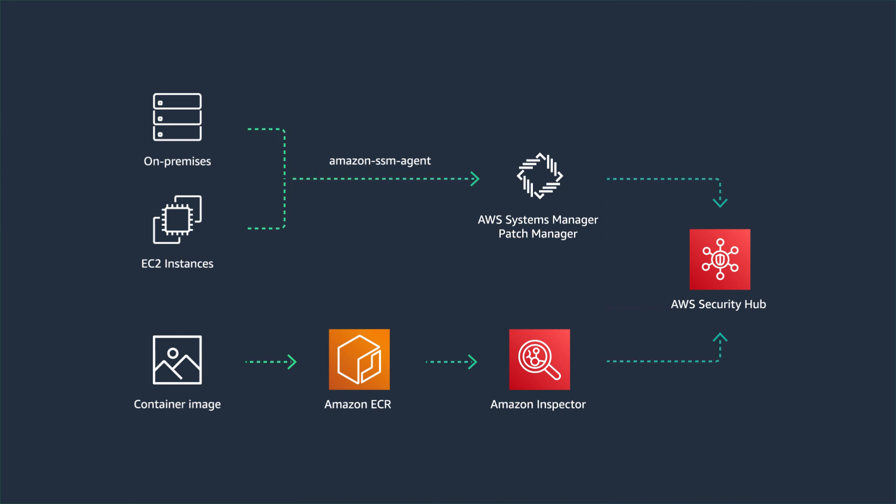With Security Hub, we have been able to tie our vulnerability management solution into a neat bow. In this episode, we saw how we could build a vulnerability management solution in a hybrid environment with servers, Amazon EC2 instances, and container images. We used services like AWS Systems Manager, Amazon ECR, Amazon Inspector, and AWS Security Hub.